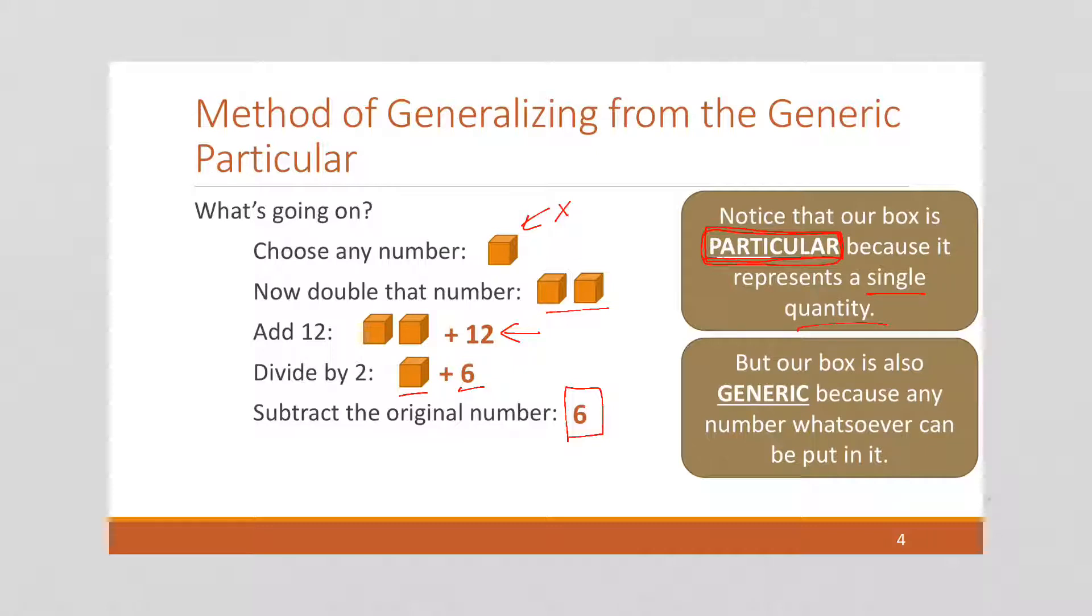But the box is also generic, because we all could use different numbers. And no matter what number we put in, this would work. So this idea where we have generic yet particular numbers is what is called this method of generalizing from the generic particular, and it's going to be very powerful.